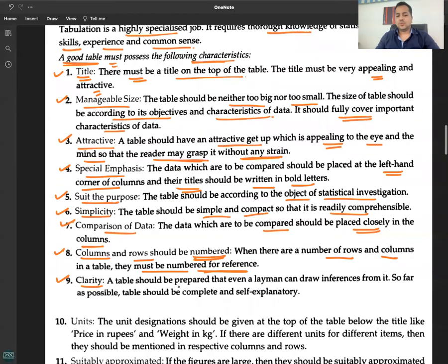Number nine: Clarity. A table should be prepared so that even a layman can draw inferences from it. So far as possible, the table should be complete and self-explanatory.